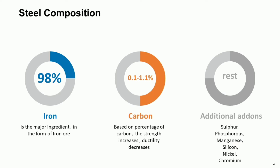Steel is basically iron, added in the form of iron ore, which comprises almost 98% of its composition. Carbon is added to increase its strength, ranging from 0.1 to 1.1%. Many other add-on metals and chemicals are added, like sulfur, phosphorus, manganese, silicon, nickel, and chromium, each having different effects. For example, adding chromium yields stainless steel.